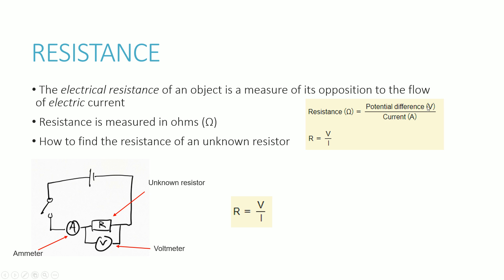To measure the voltage or potential difference of something, we use a voltmeter, which has this component diagram. To measure the current of something, we use an ammeter, which has a component diagram like this. We will learn more about that in the next topic, but for now just keep in mind that a voltmeter measures voltage and an ammeter measures the current.